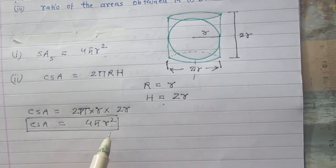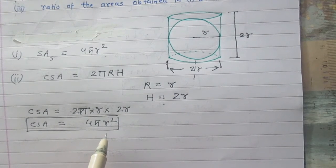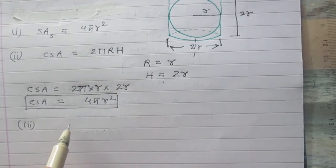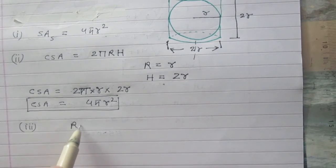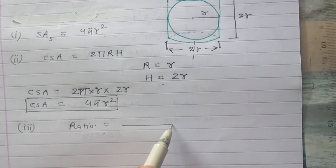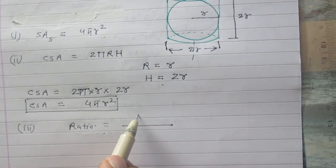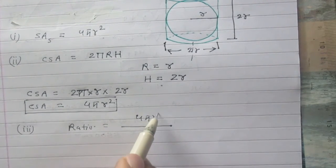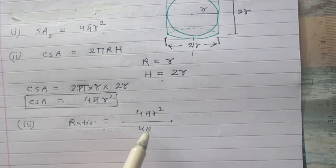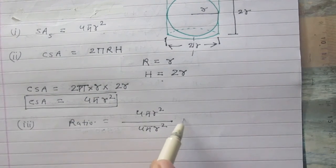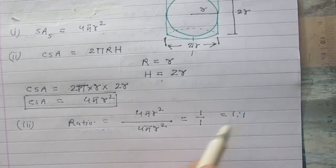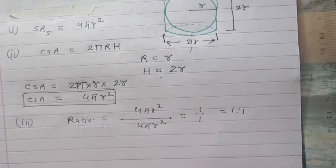So the curved surface area of the cylinder is 4πR², which is just equal to the surface area of the sphere. In part 3, we have to find the ratio of the area obtained in part 1 to the area obtained in part 2. The ratio is 4πR² to 4πR², so the ratio is 1:1.